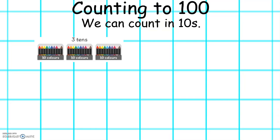Let's look at what we've got here. We've got three tens and we can count in tens: 10, 20, 30.